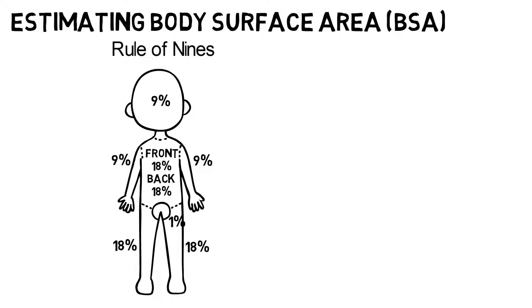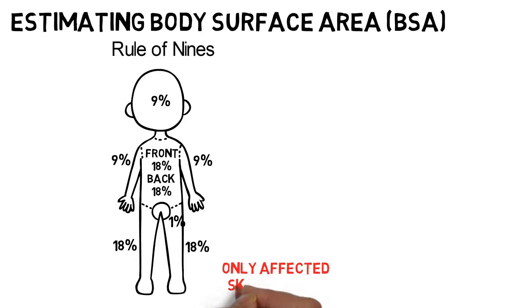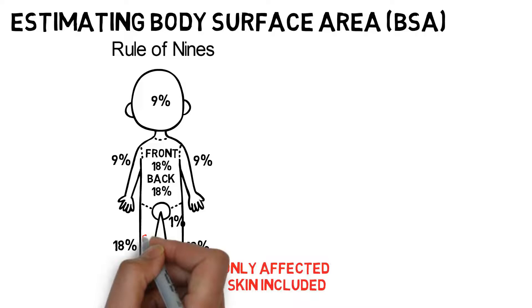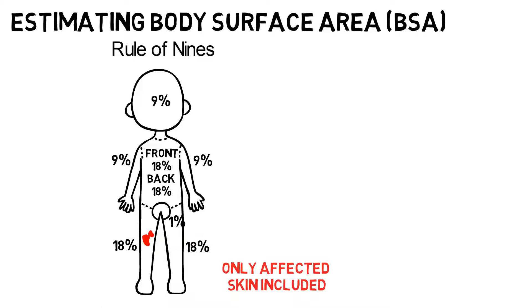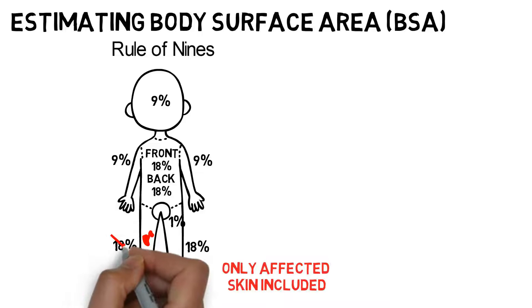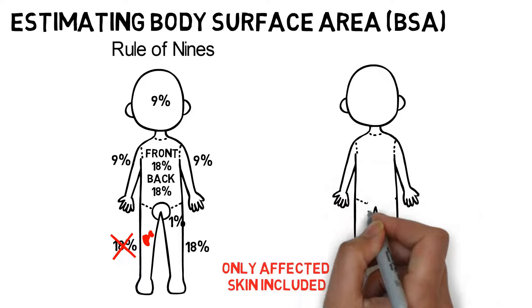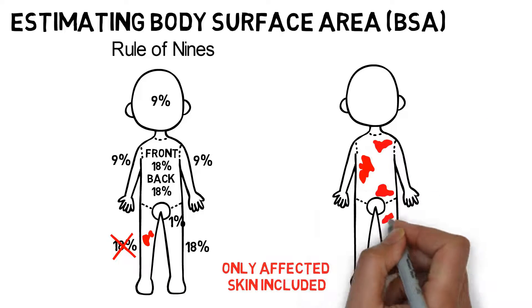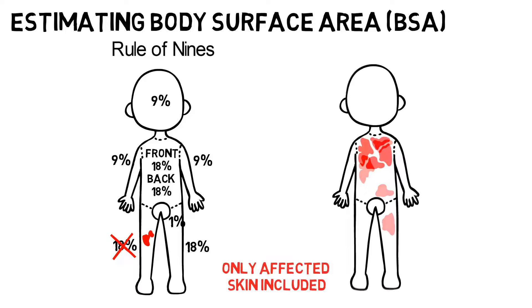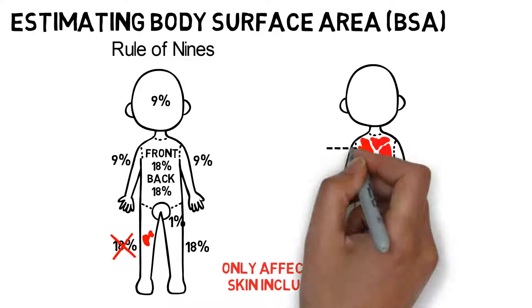It's important to note that only the affected skin should be included in the BSA calculation, not the whole area. For example, if a small area of the leg is affected, this does not mean that the BSA is 18%. To accurately calculate BSA, you need to imagine the areas of rash grouped together before applying the rule of nines.